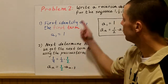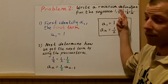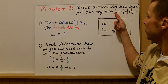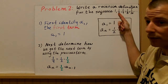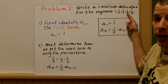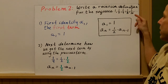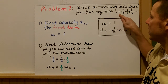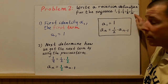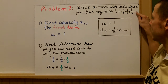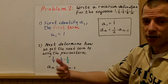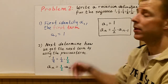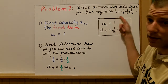In problem number two, we're going to write a recursive formula for this sequence: one, one-half, one-fourth, one-eighth, and one-sixteenth, with a comma dot dot dot. We would consider this an infinite sequence because of the dot dot dot — the pattern continues on forever.